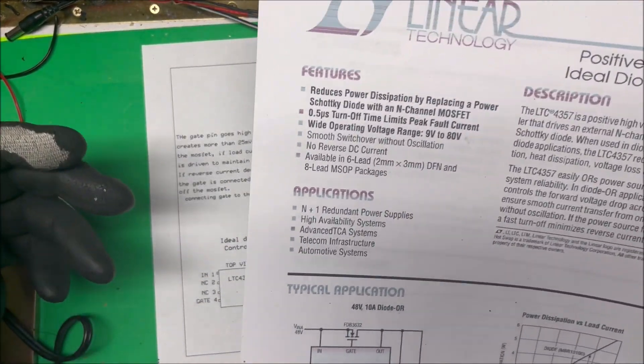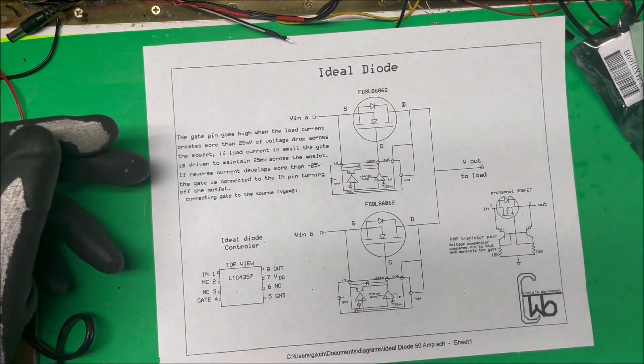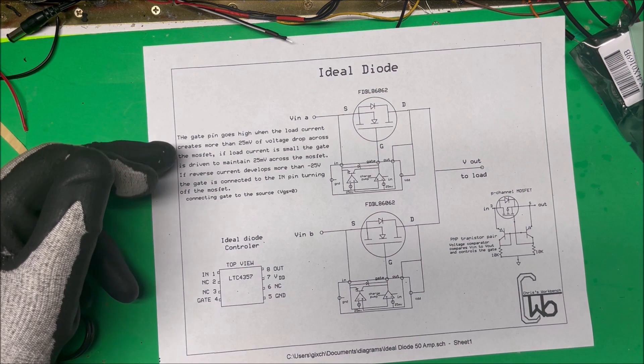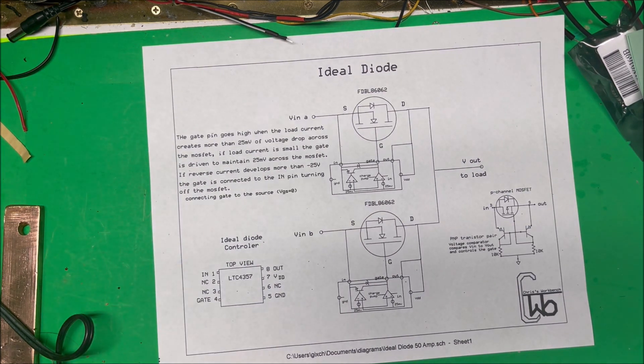What happens here is the gate pin goes high when the load current creates more than 25 millivolts of voltage drop across the MOSFET.